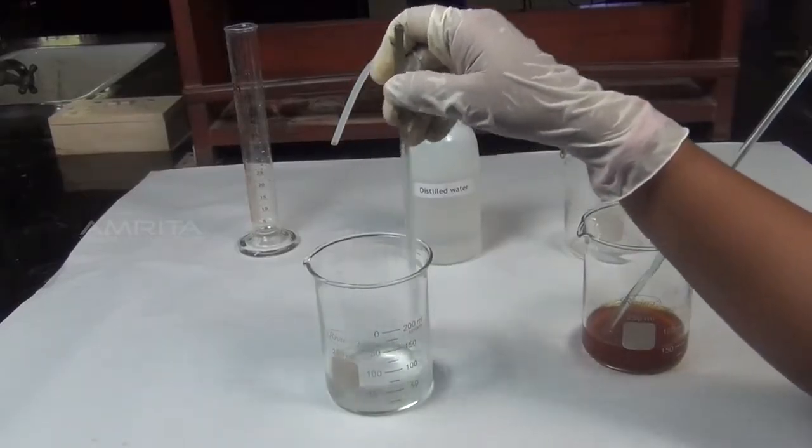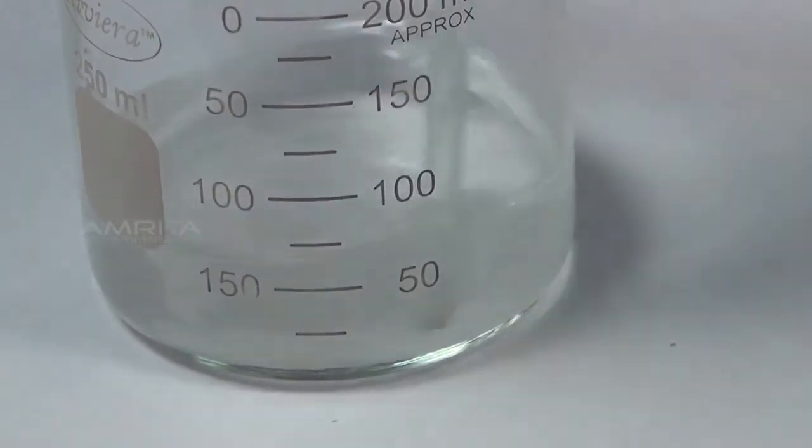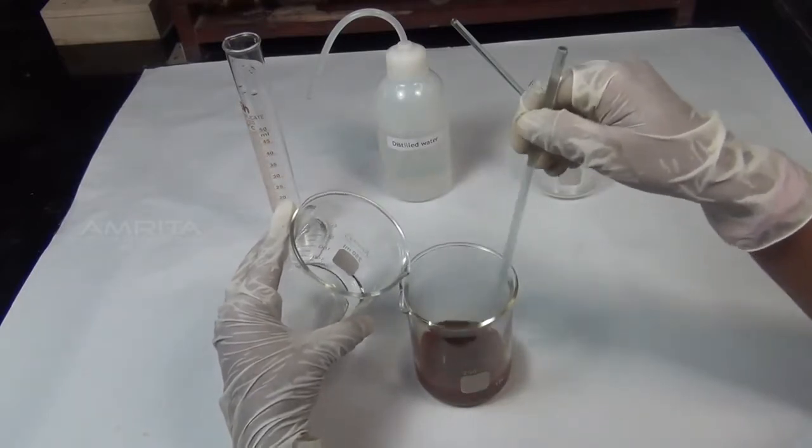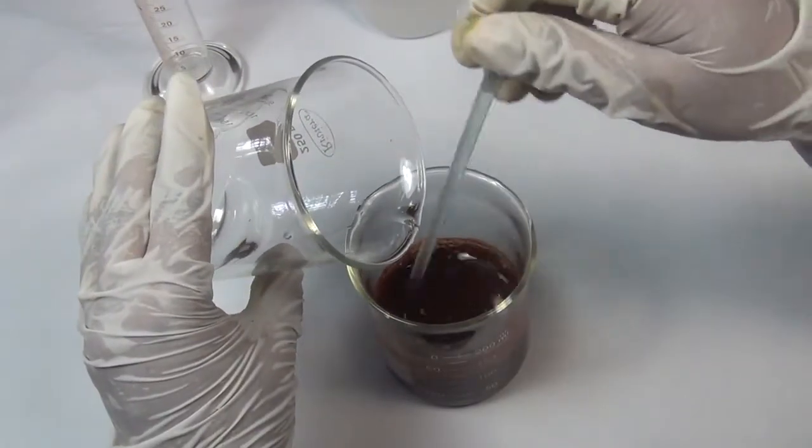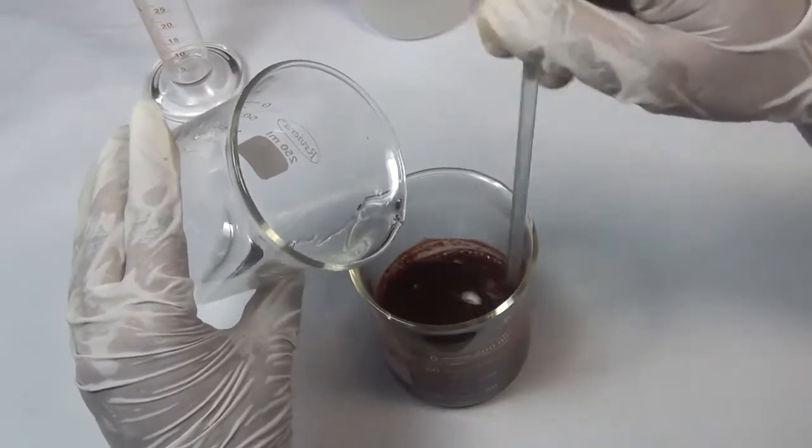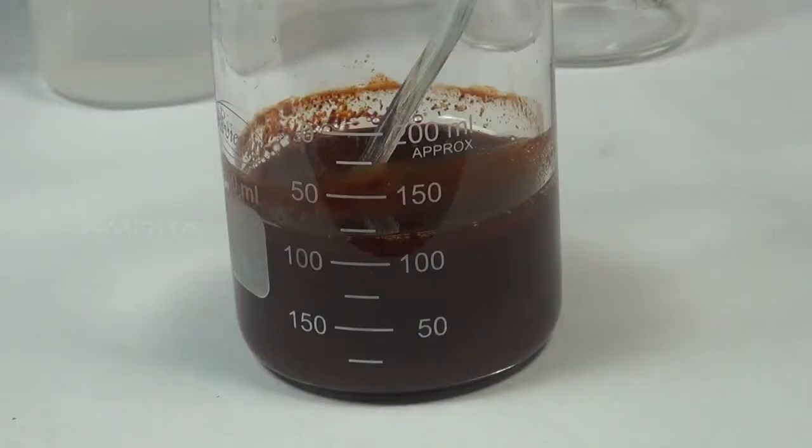Add potassium hydroxide solution to ferric chloride solution in small proportions with constant stirring using a glass rod. Ferric chloride reacts with potassium hydroxide to form a brown precipitate of ferric hydroxide.